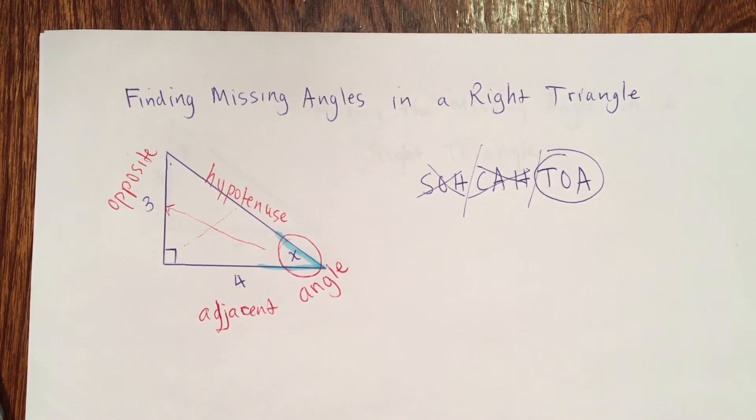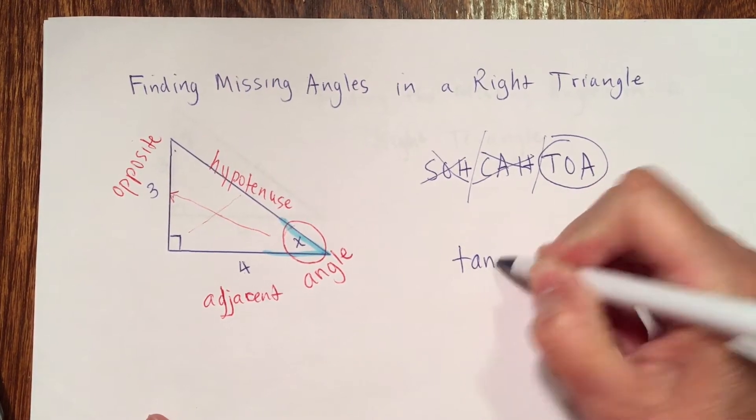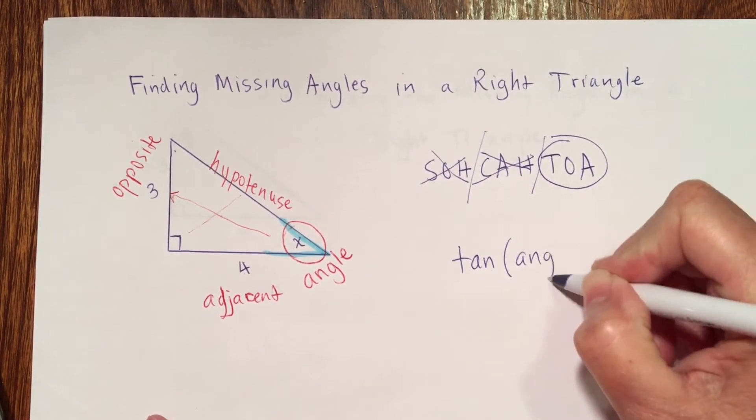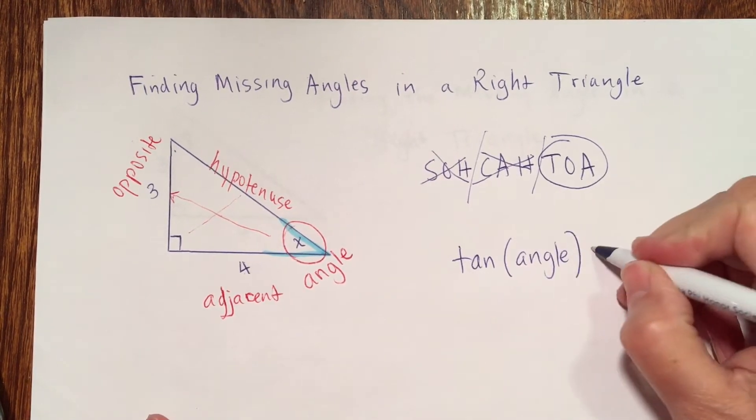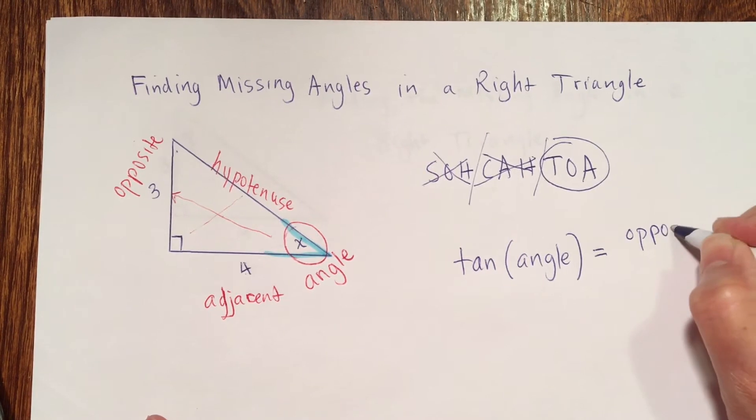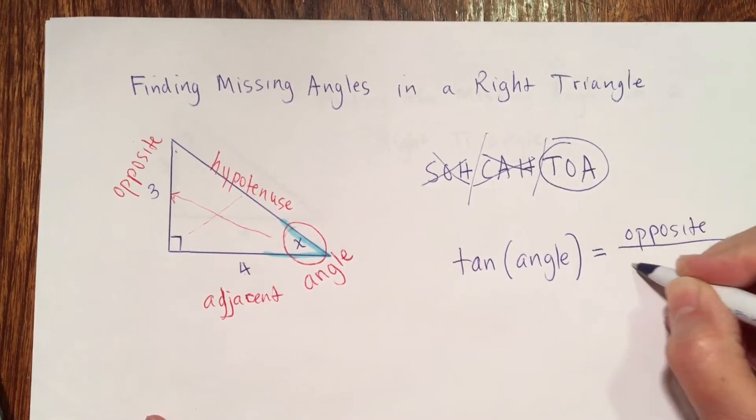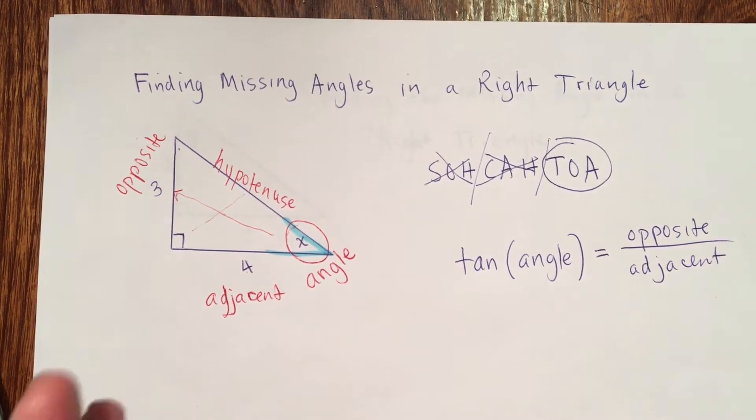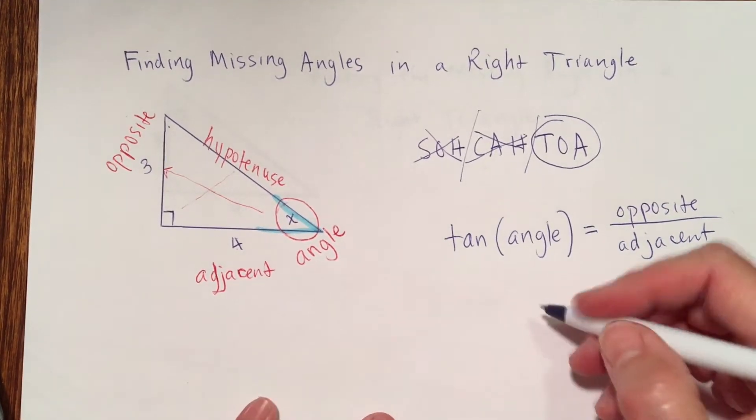Tangent is opposite over adjacent. So, I will write the tangent of the angle. I'm going to write the word angle there, equals opposite over adjacent. So, there's the formula that I want to use for this problem.